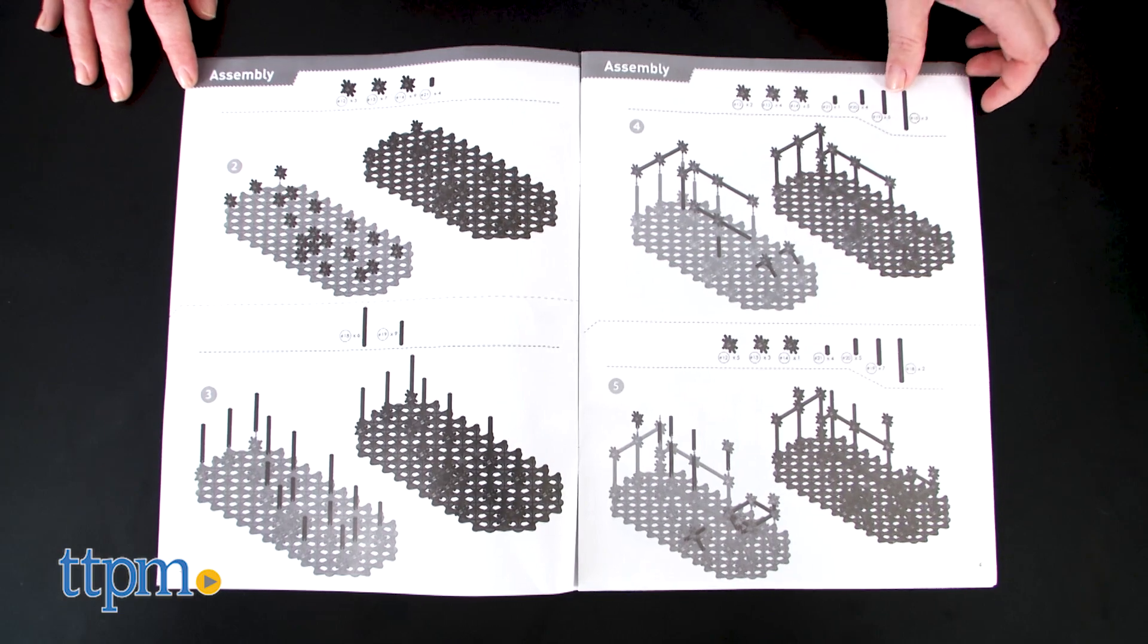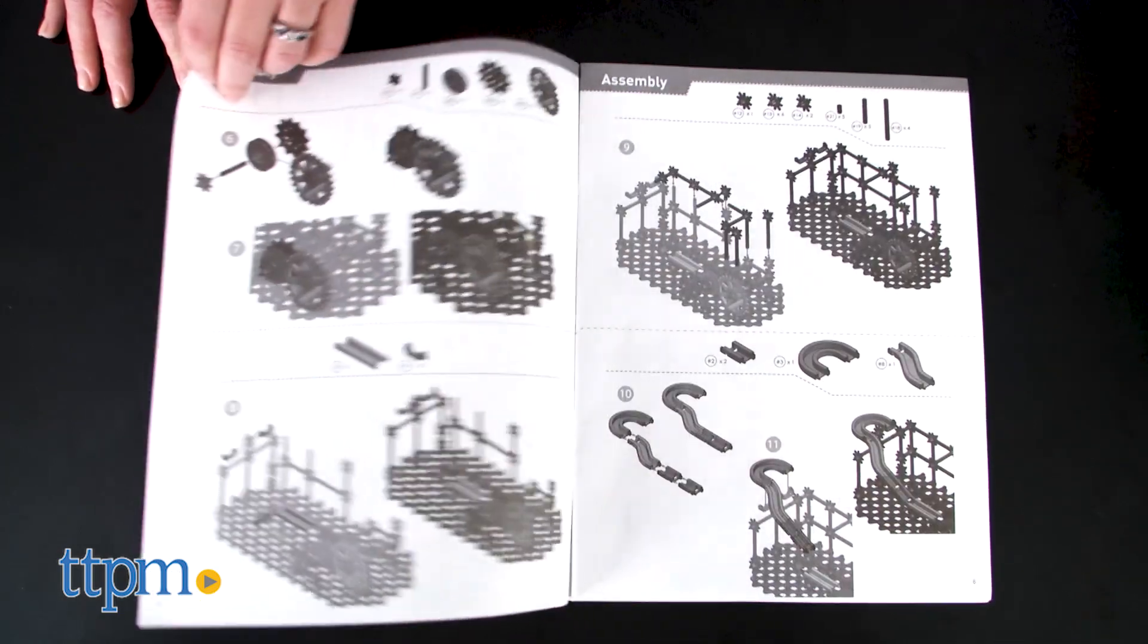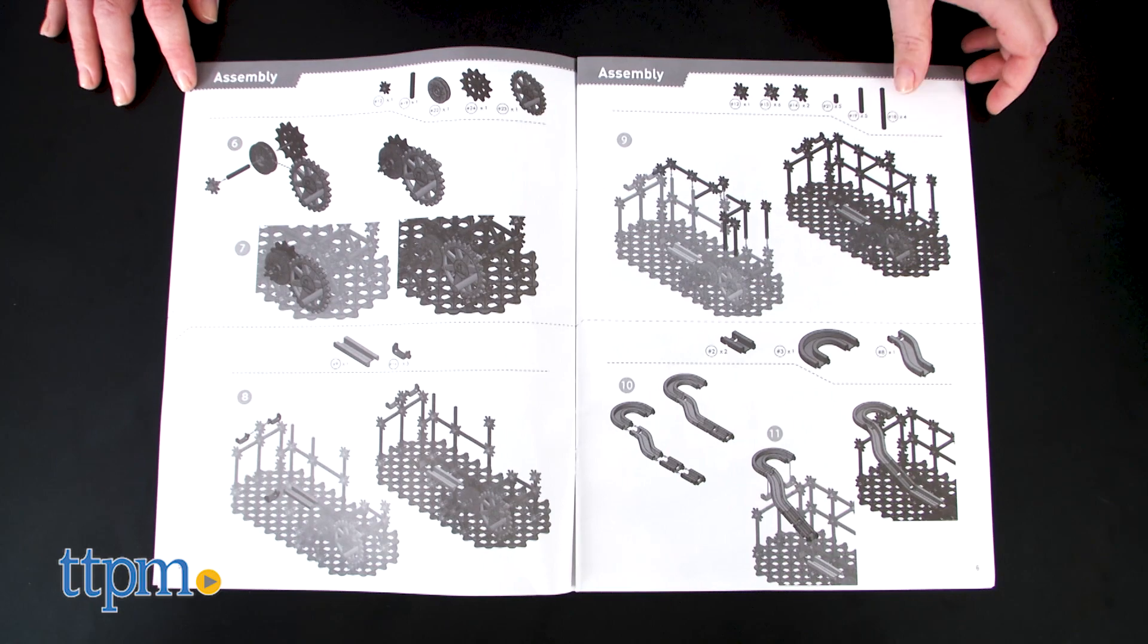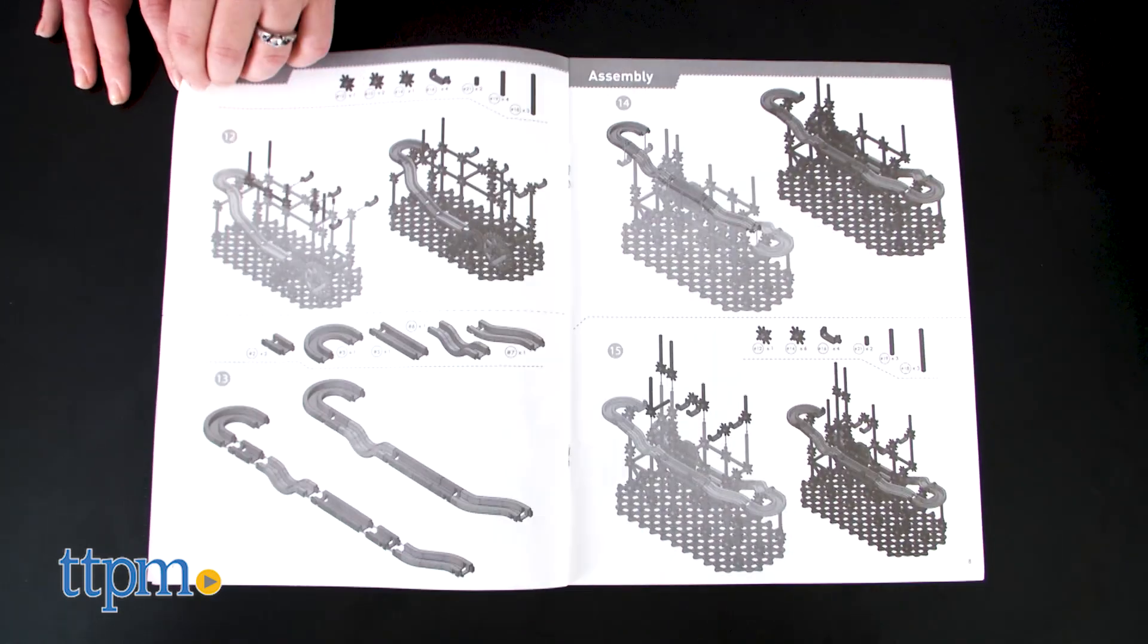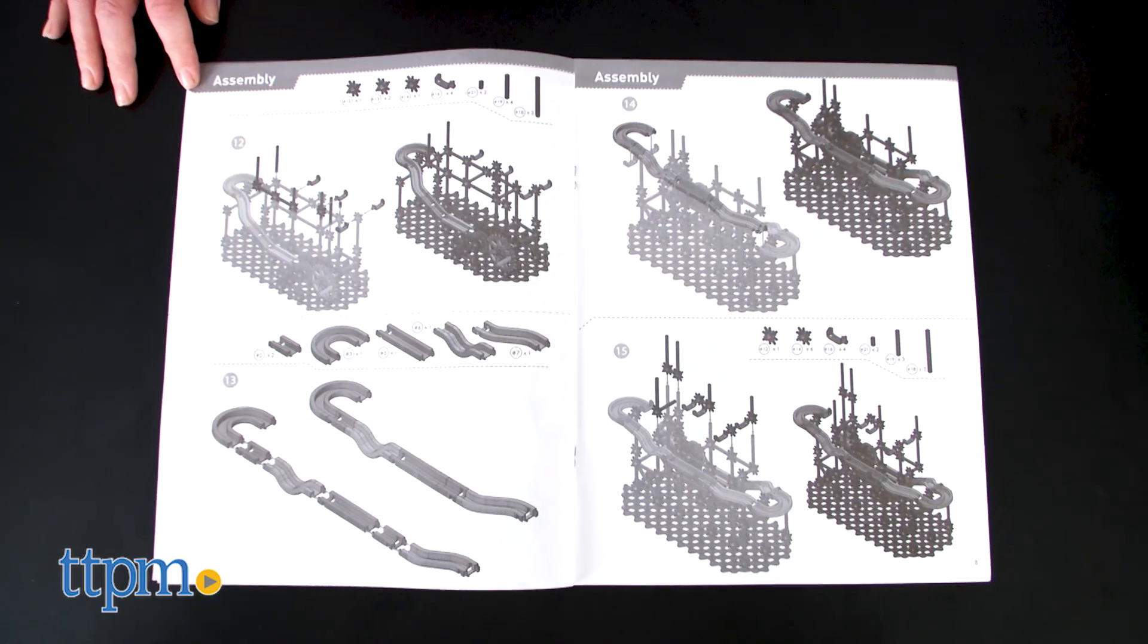It took us 1 hour and 30 minutes to assemble this marble run and the instructions were a little tricky to follow because they are in black and white, making it hard to distinguish which of the colorful pieces we were supposed to be using.